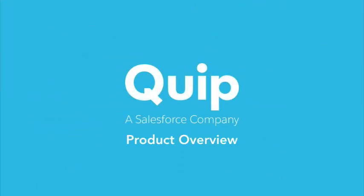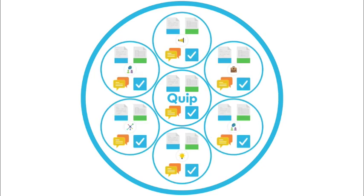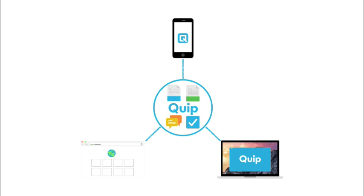You're probably wondering what is Quip? So let me explain. Quip is a productivity suite that combines documents, spreadsheets, tasks, and team chat in one place. Quip documents and spreadsheets are organized in shared folders so everything is in one place and your team has easy access. Quip is accessible from your web browser, Quip's desktop app, and Quip's mobile app, so you can stay connected with your team and your work wherever you are.